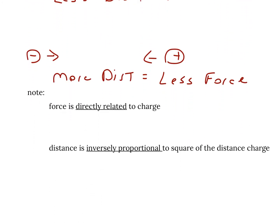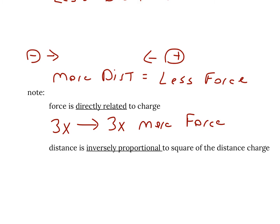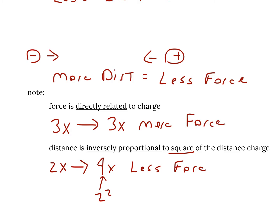Force is directly proportional to charge — if one goes up, the other goes up. For example, if you increase the charge by three times, you get three times more force. Distance is inversely proportional to the square of the distance. If one goes up, the other goes down, and the square changes how much. If you increase the distance by two times, you get four times less force — because two squared equals four.